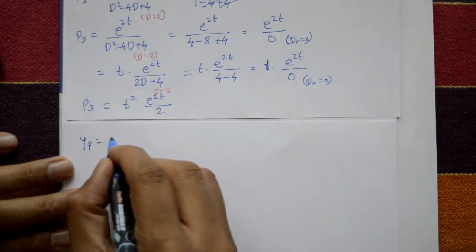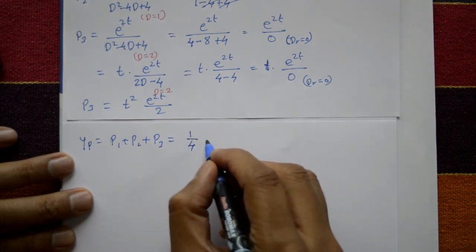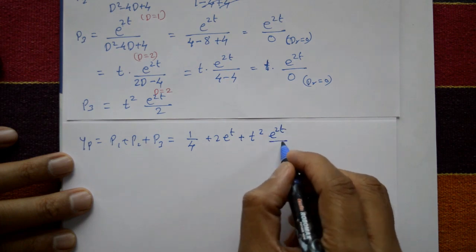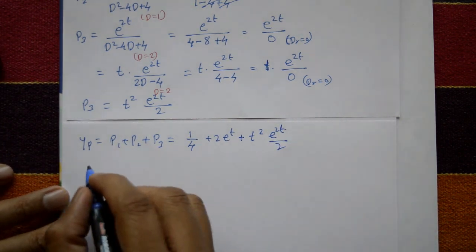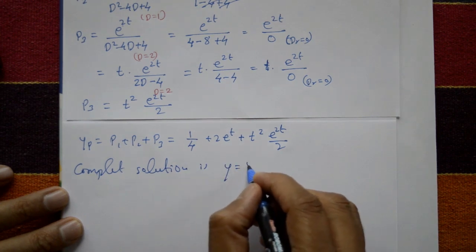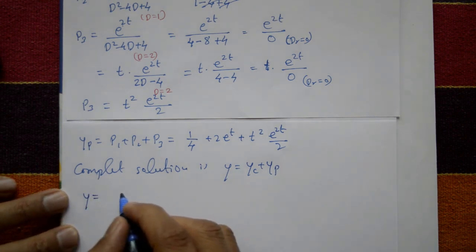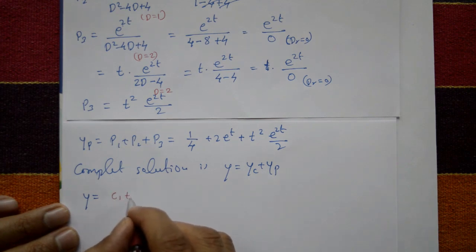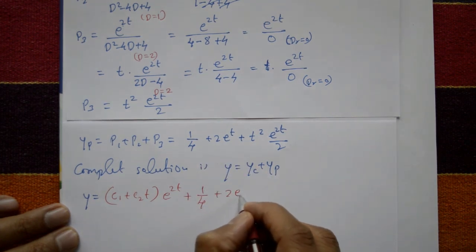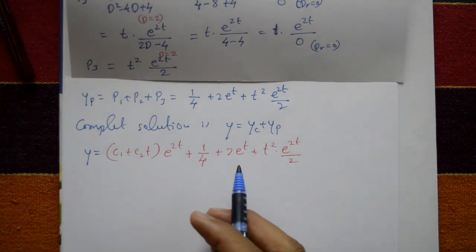The particular integral yp equals P1 plus P2 plus P3 equals 1/4 plus 2e^t plus t²·e^(2t)/2. The complete general solution is y equals yc plus yp, that is y equals (c₁ plus c₂t)·e^(2t) plus 1/4 plus 2e^t plus t²·e^(2t)/2.